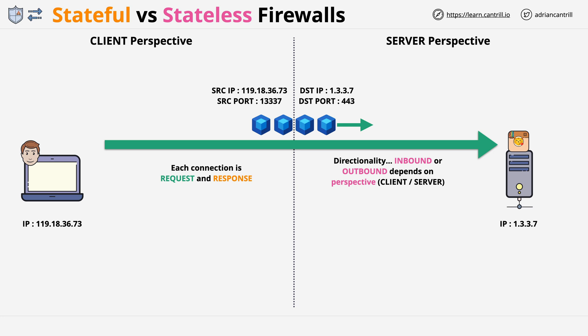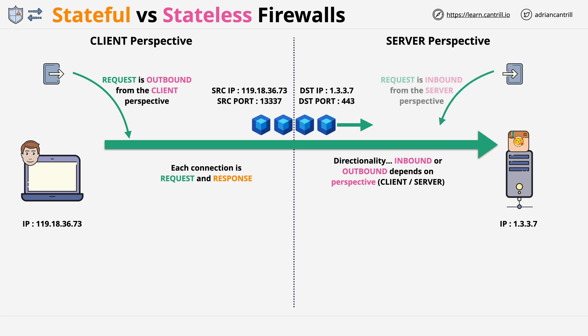This is actually a trick question, because it's both. From the client perspective, this request is an outbound connection, so if you're adding a firewall rule on the client, you would look to allow or deny an outbound connection. From the server perspective, though, it's an inbound connection. You have to think about perspective when working with firewalls.